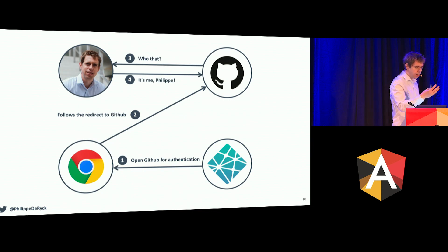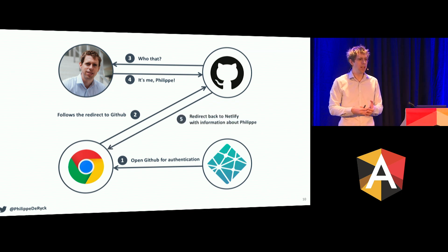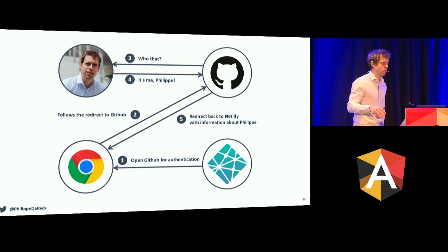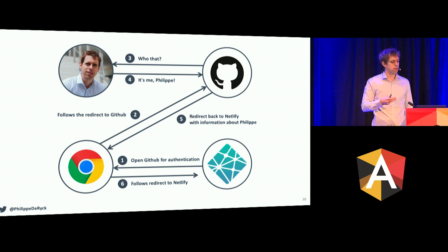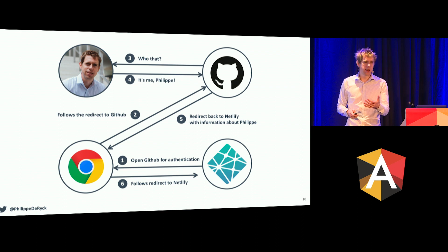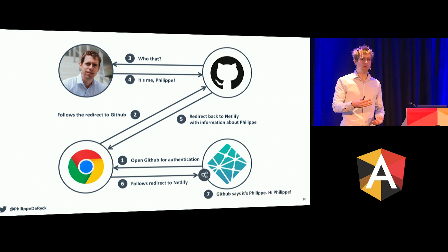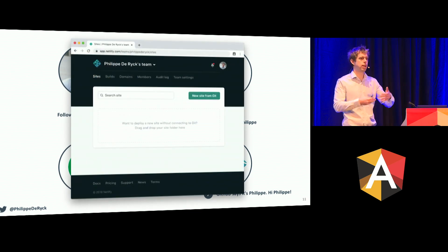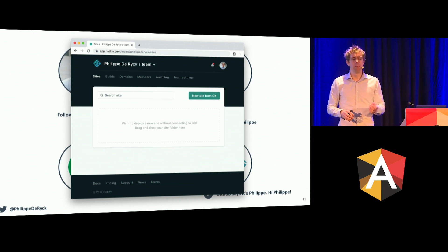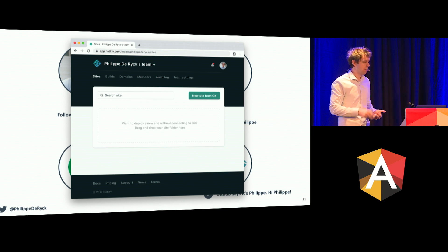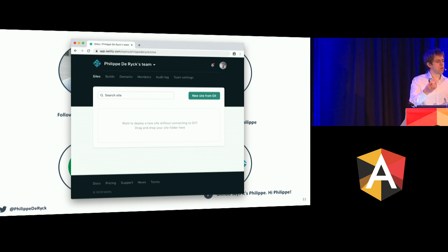When that's done, GitHub knows who I am. I authenticated to GitHub, so GitHub is going to relay that information to Netlify again through my browser — a redirect back to Netlify. And that is OpenID Connect, somewhat. With that information, Netlify can see, "GitHub says that you're Philippe — awesome." Netlify is going to show Philippe Direct's team, take my picture from GitHub and show it. I have not entered any information in Netlify; I just logged in with GitHub. The information GitHub relays contains my name, my email address, my picture, and some other stuff.